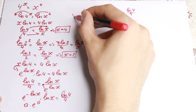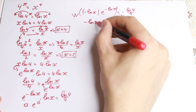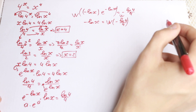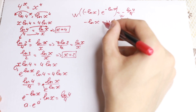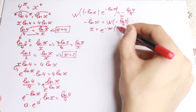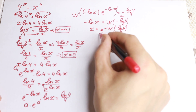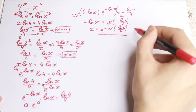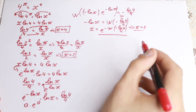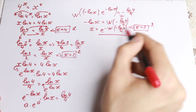Now applying the Lambert W function to both sides: W[(−ln(x))·e^(−ln(x)}] = W[−ln(4)/4], which gives −ln(x) = W(−ln(4)/4). Therefore x = e^(−W(−ln(4)/4)). From this expression we can confirm x=2 and x=4 as solutions, which we found before.